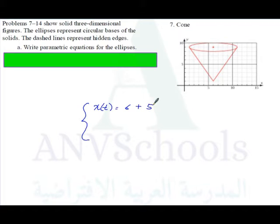So 6 plus 5 cosine t. And for the y part, that would be located on 1, 2, 3, 4, 5, 6, 7, 8, 9, so it's located at 9.